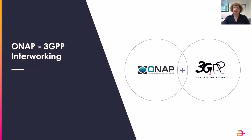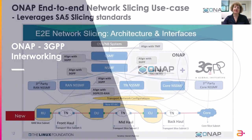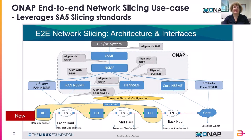For ONAP 3GPP interworking, again the key use case is network slicing. 3GPP SA5 defines the slicing for RAN and core — not for transport. What is being done when implementing RAN and core in the system — the functionality, the interfaces between them, all the parameters shaping the slices, slice subnets, slice profile, and subnet profile — all those things are implemented by standards defined by SA5, in very close collaboration with SA5 people.